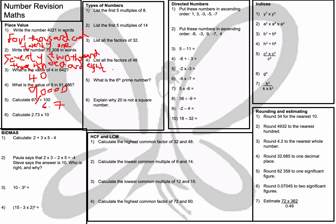Question number 6: calculate 2.73 times 10. Moving the decimal place one point to the right I get 27.3.